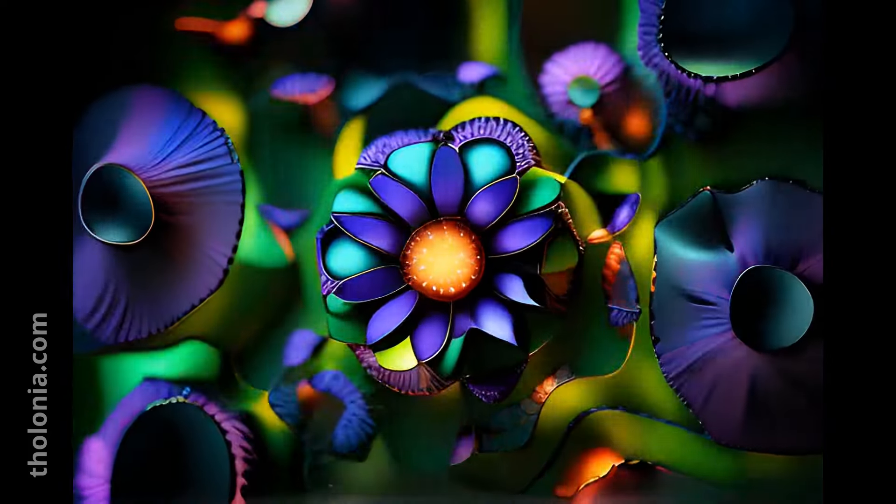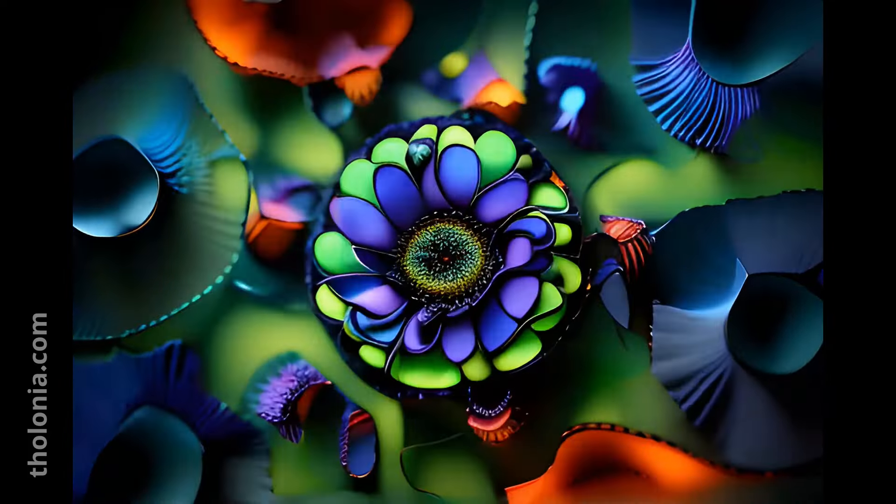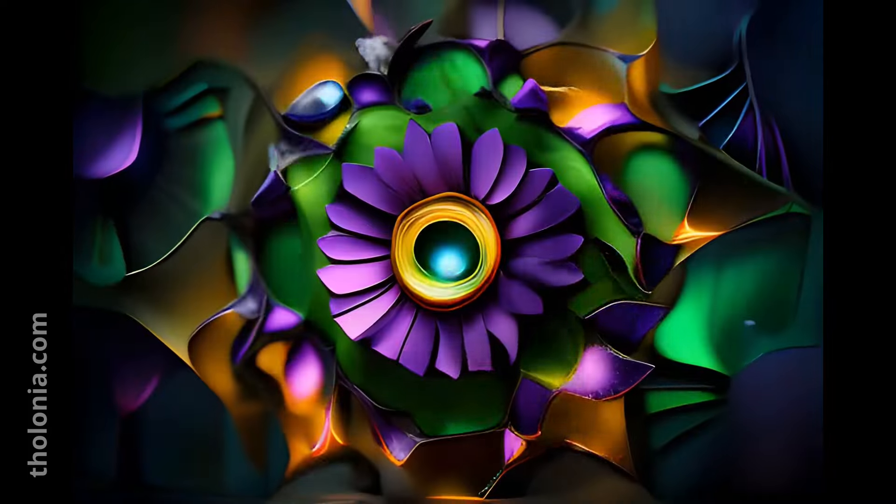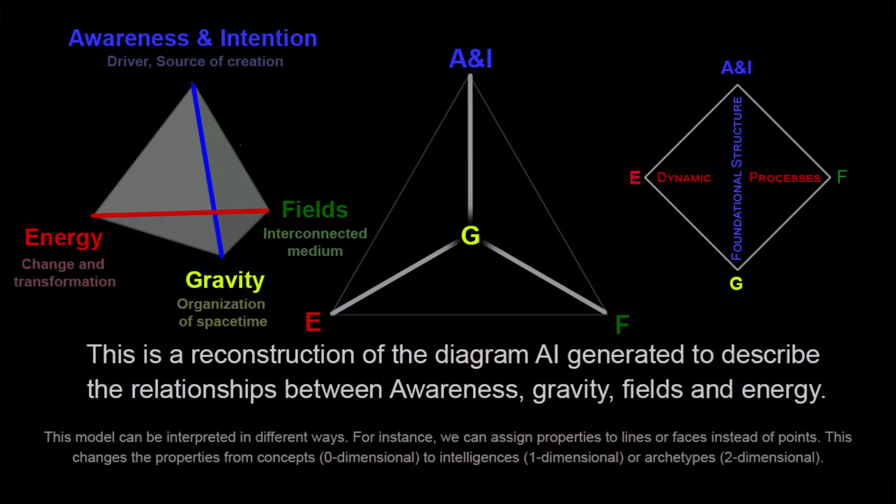It appears as though we now have a tetrahedral structure. We have four points, all interconnected to each other, with one of those points being the source for the other three points. Correct. The tetrahedral structure combines a source of creation, or awareness, with three interconnected attributes: energy, fields, and gravity. Awareness is the primary point driving and integrating everything. Energy transforms and interacts with fields and gravity. Fields represent the interconnected medium, while gravity organizes structure and order. This holistic model unifies physical and metaphysical aspects, depicting how awareness sustains the universe's fabric.